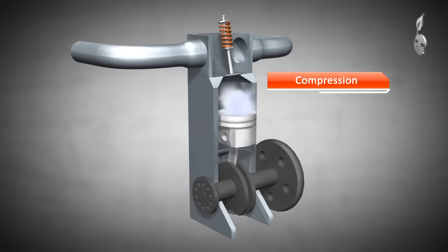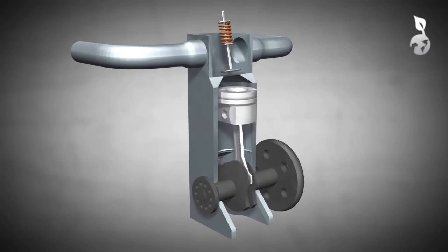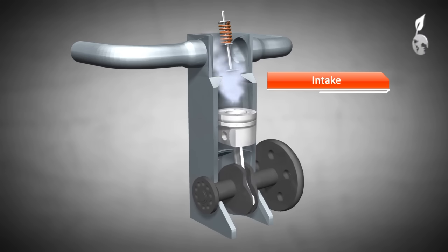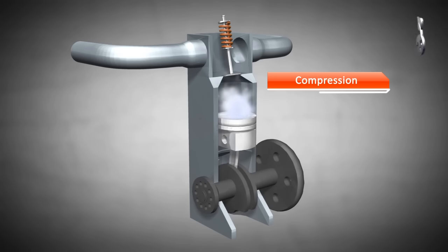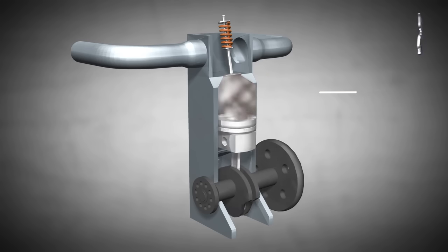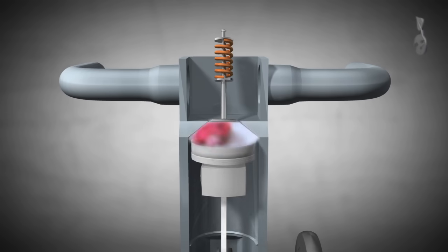In a standard four-stroke diesel engine, air is forced into the cylinder by atmospheric pressure. This is the reason why this kind of engine is known as a naturally aspirated engine.